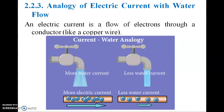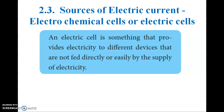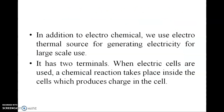An analogy of electric current with water flow shows the difference between more and less current. This is how the flow of current behaves. An electric cell is a source of electric current that provides electricity to devices not easily fed directly by a power supply. In addition to electrochemical cells, we use electrothermal sources for generating electricity on a large scale.